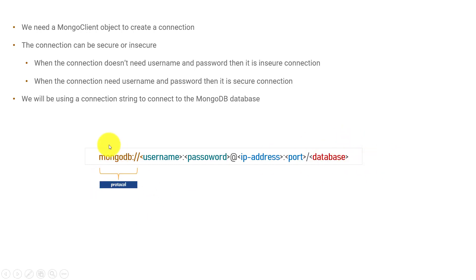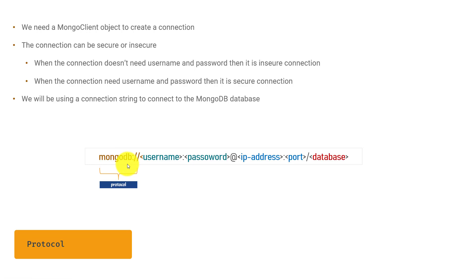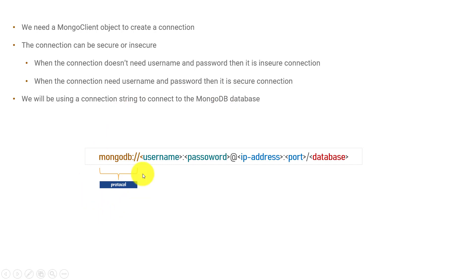The first part of the connection string is the protocol. We are using the MongoDB protocol to connect to our database, similar to how there are MySQL or HTTP protocols. For connecting to a MongoDB instance, the client must use the MongoDB protocol.